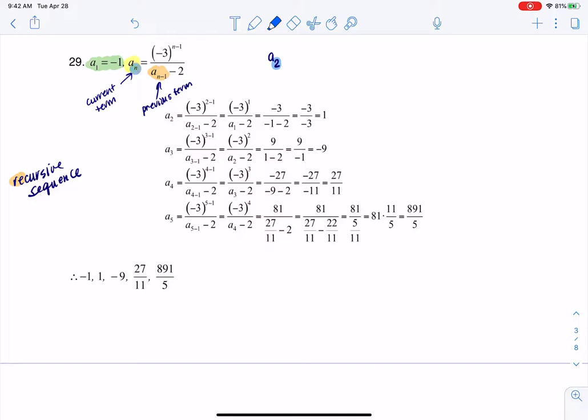So my n value is 2. I'm going to plug in 2 for n there, and 2 for n there. And when I start to play this out, this is going to become negative 3 to the 2 minus 1 over a sub 2 minus 1 minus 2. And let me simplify.